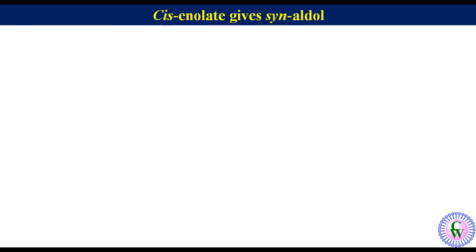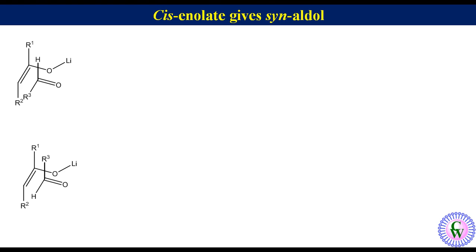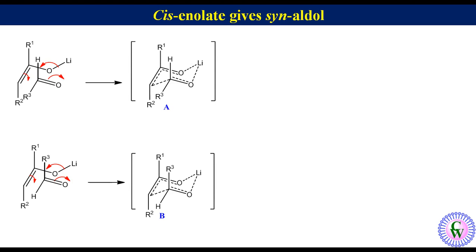Now we will learn how cis enolate preferentially gives syn-aldol while trans enolate gives preferentially anti-aldol. Let's first see how cis enolate gives preferentially syn-aldol. We can draw the cis enolate like this. There are two ways in which the aldehyde can orient — in one orientation H is axial, and in the other R3 is axial. Nucleophilic addition will generate six-membered chair-like transition states A and B. Transition state A with equatorial R3 is more stable, while transition state B with axial R3 is less stable because of stronger 1,3-diaxial interaction between R1 and R3. So the reaction proceeds mainly through transition state A.